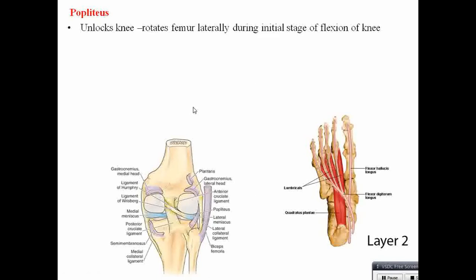Popliteus muscle — its action is unlocking the knee. When your knee is completely extended, it is in a locked position. When you begin to flex the knee, there is a requirement of unlocking the femur, and that is done by popliteus muscle. Popliteus rotates the femur laterally during the initial stage of flexion of the knee. So unlocking is the first stage of flexion of the knee.